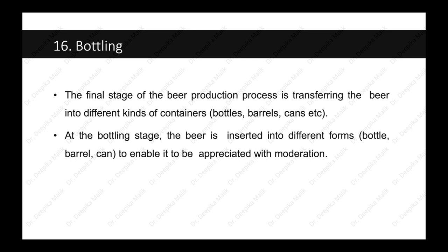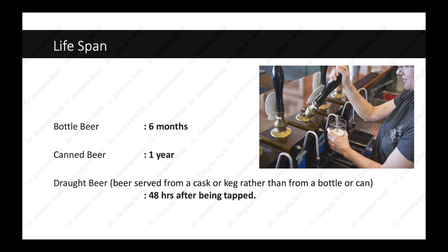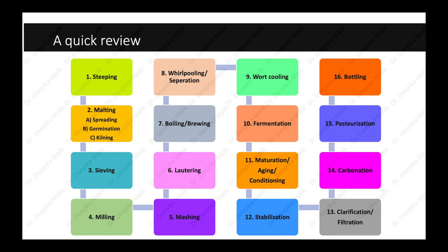This slide shows the lifespan of packaged beers. Bottled beer lasts for six months, canned beer lasts for one year, and draught beer — that is, beer served from a cask or keg rather than from a bottle or can — lasts for 48 hours after being tapped.